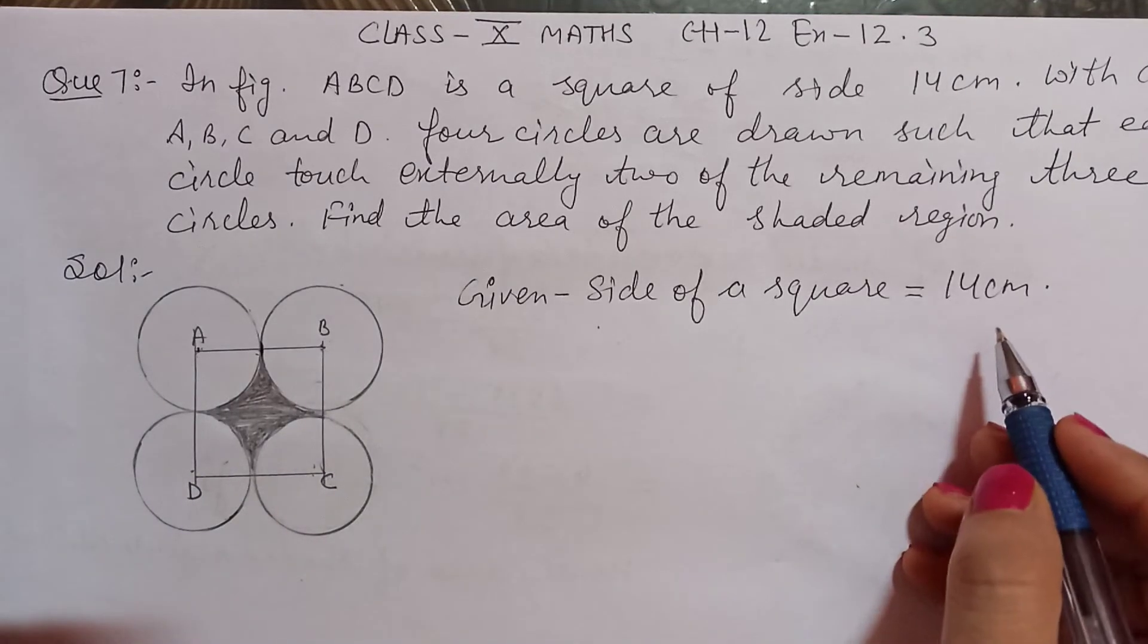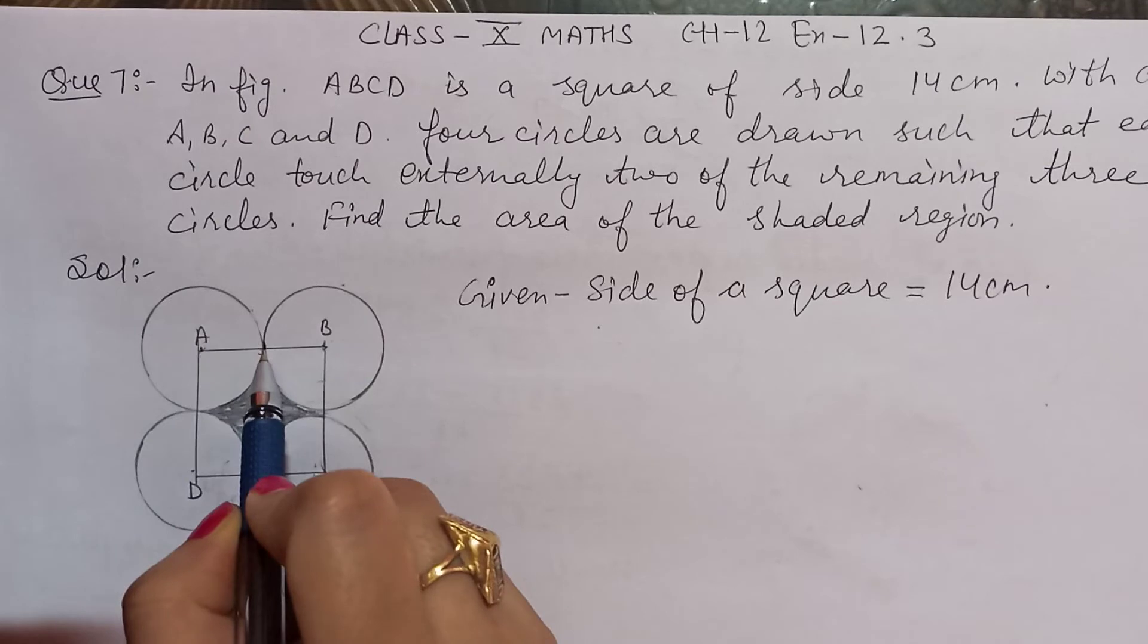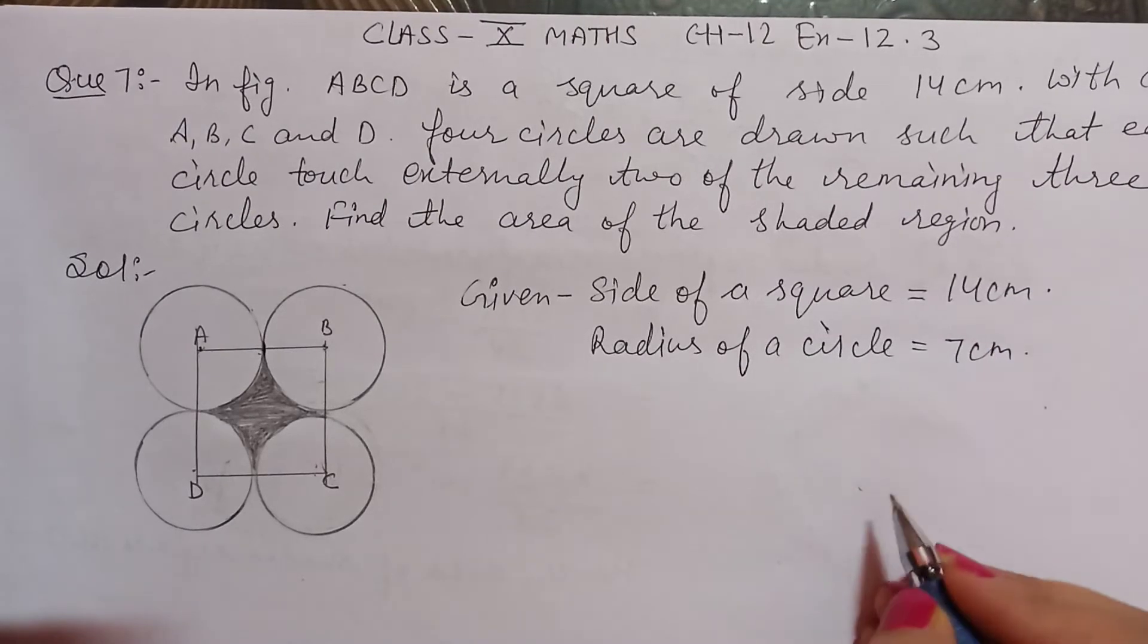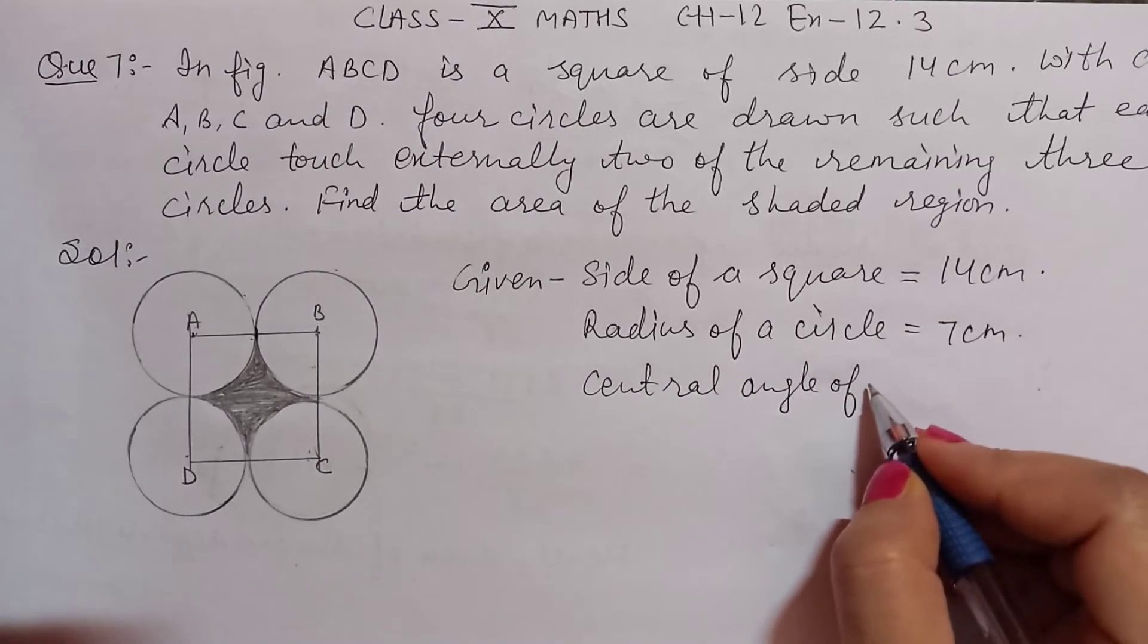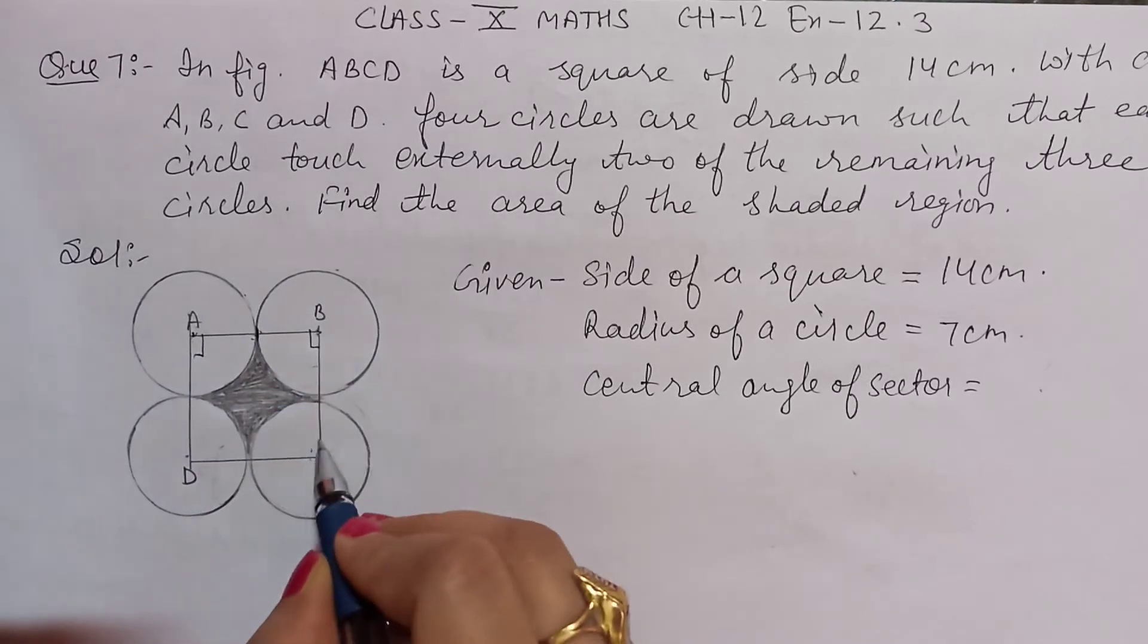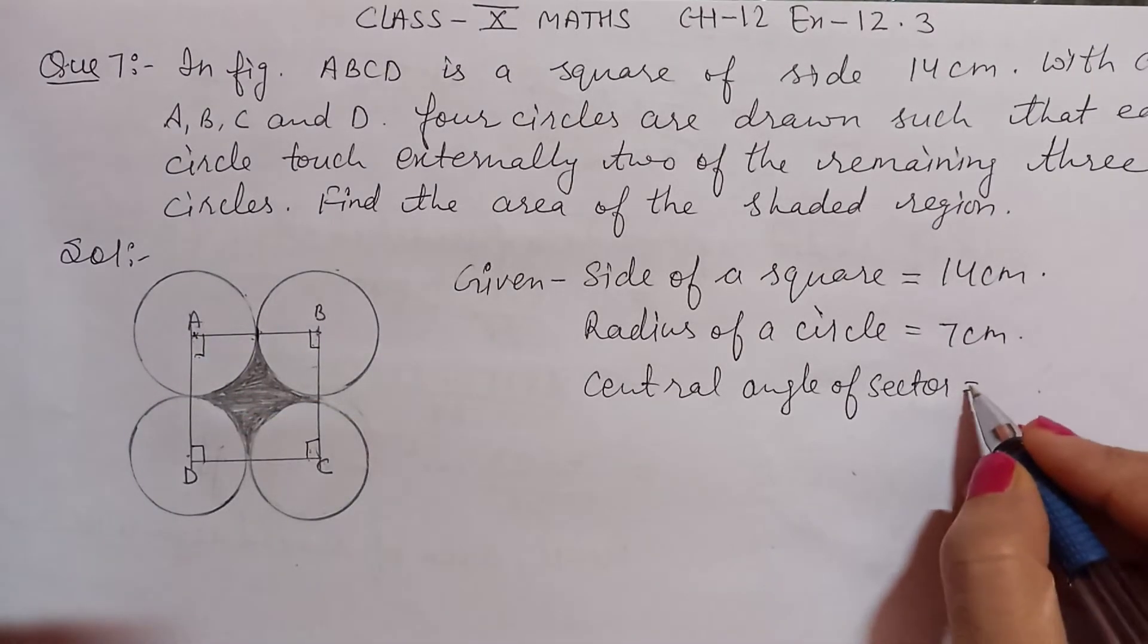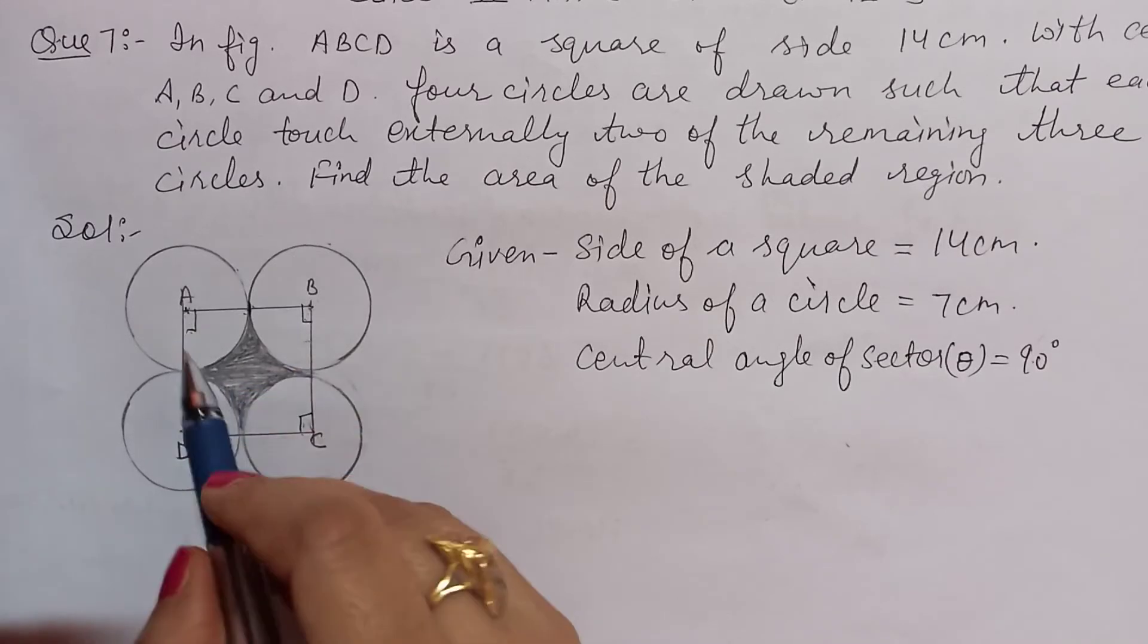Given you have a side of the square which is 14 centimeter. Now you have to find the area of the shaded region. The radius of the circle will be half of the side of the square. So the radius of the circle is 7 centimeter.